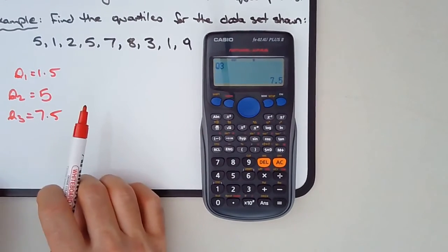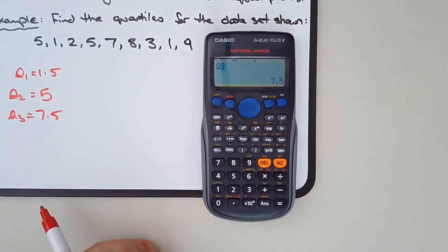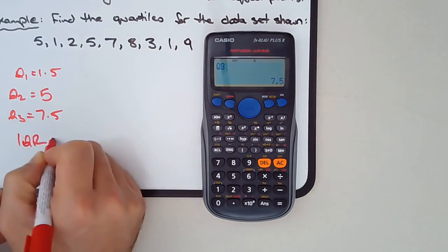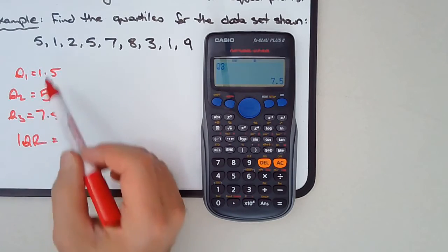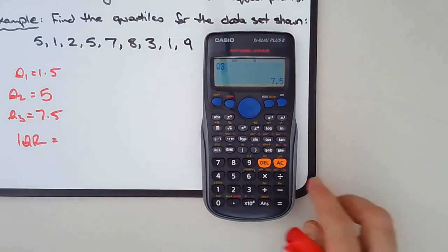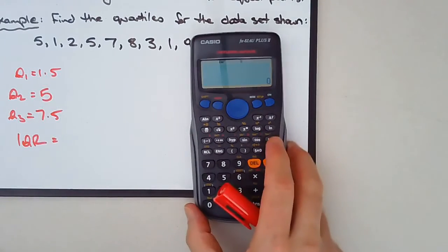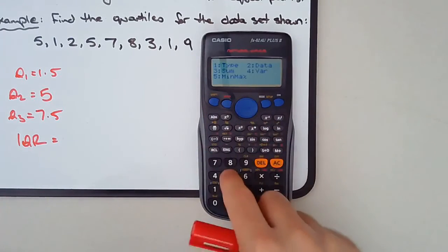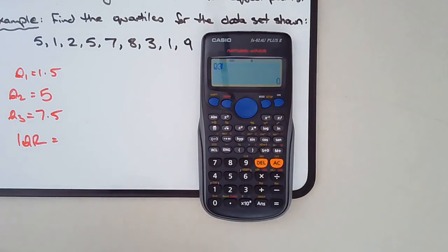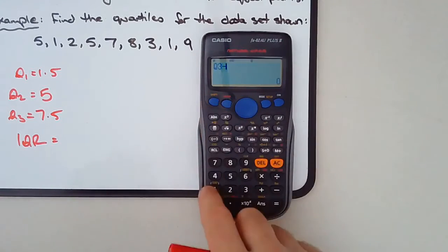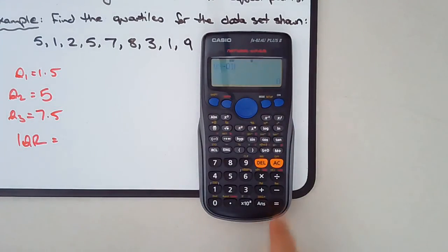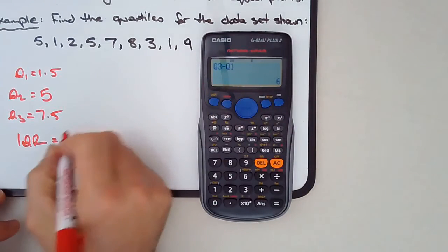So these were the same values that we determined in the previous video where we worked out these values manually. Now, interquartile range — you just subtract 1.5 from 7.5. But if you want to use the calculator, press Shift, 1, number 5 — Q3 minus Shift, 1, number 5 — Q1. Q3 minus Q1, and there you go. How good is that?